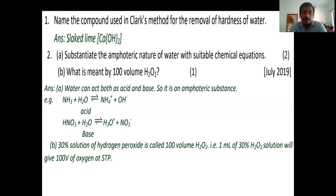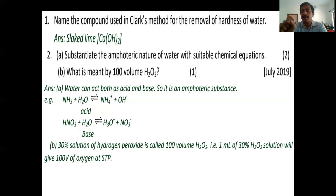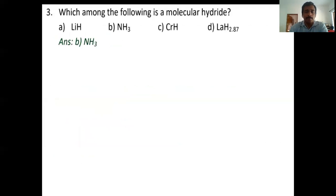100 volume H2O2 is a 30% solution of hydrogen peroxide. Whatever the volume — 100 volume means 1 ml can liberate 100 ml of oxygen at STP; 30 volume means 1 ml can liberate 30 ml of oxygen at STP. Next question: Which of the following is a molecular hydride?